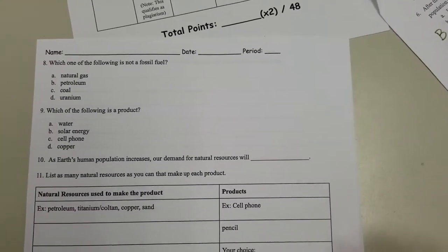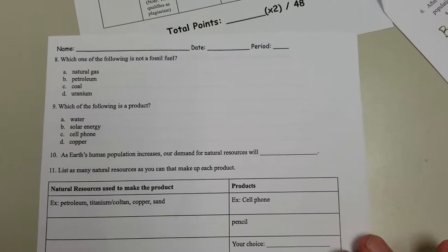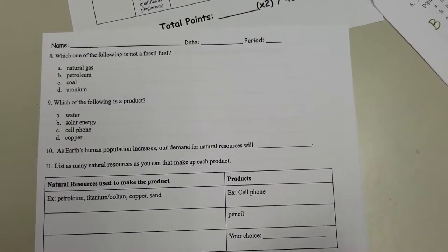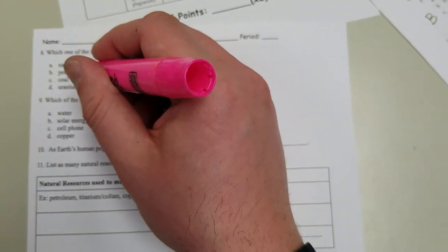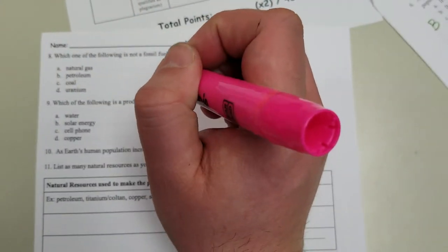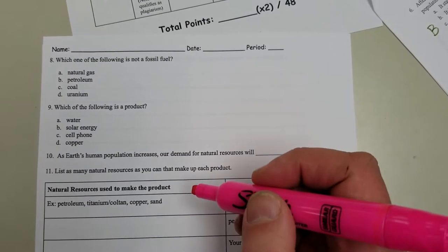Which of the following is not a fossil fuel? Fossil fuels are the ones that are made from fossils. We talked about natural gas and petroleum, both made from plants and animals breaking down. Coal is made from plants breaking down over time. So uranium is not a fossil fuel.